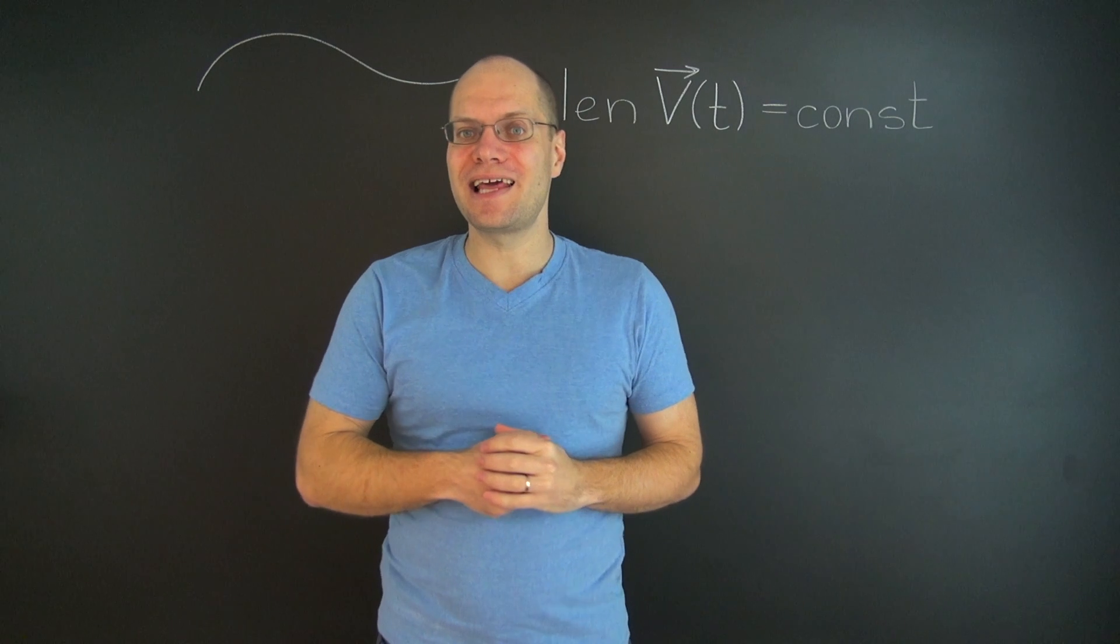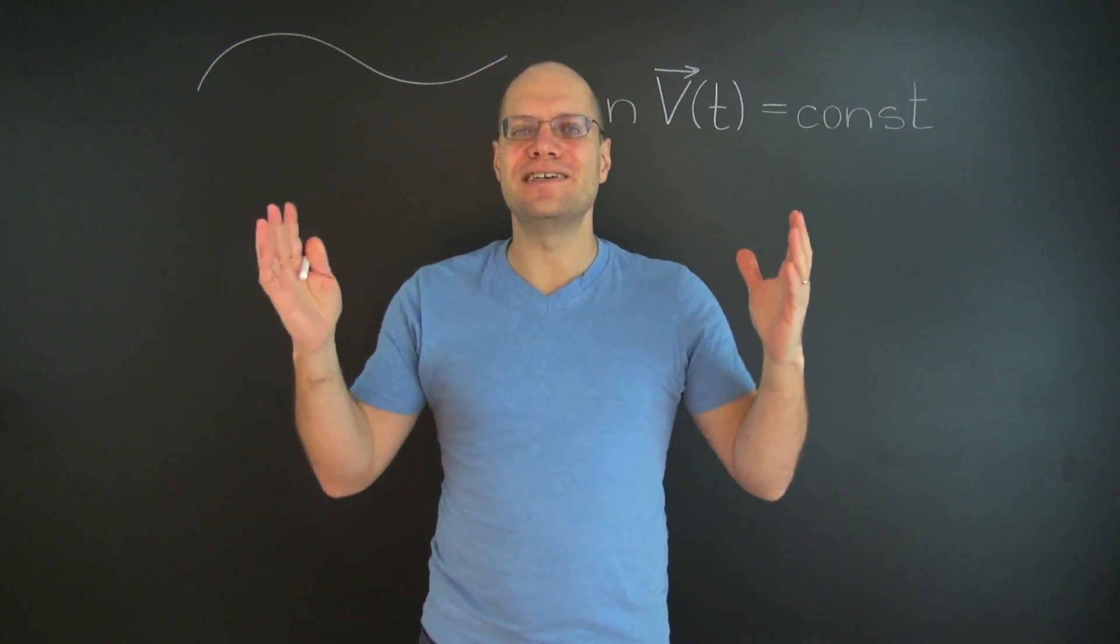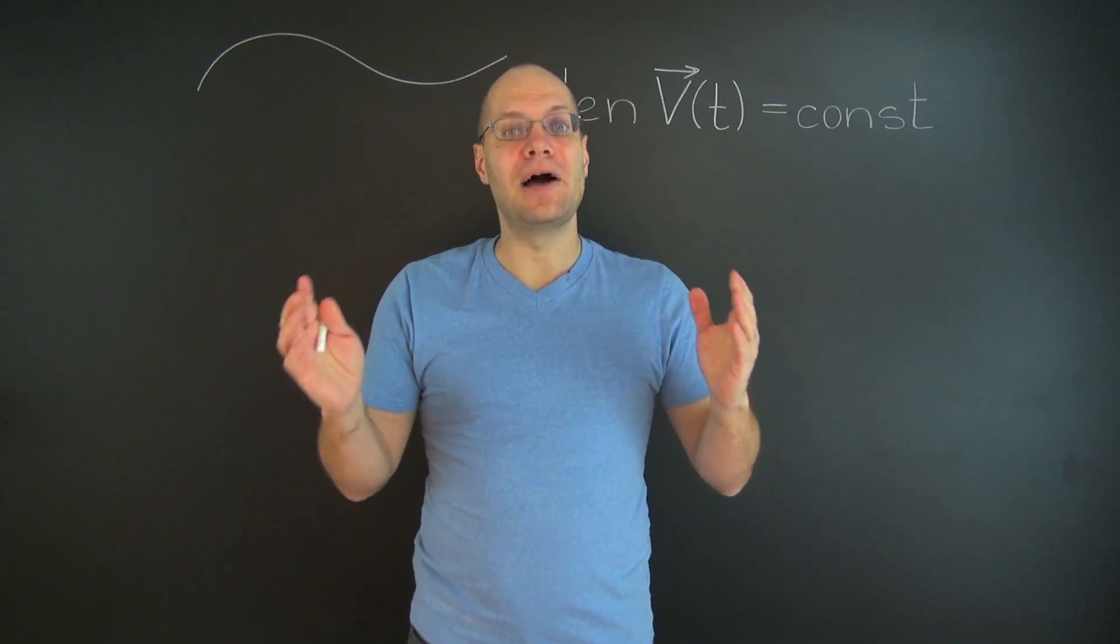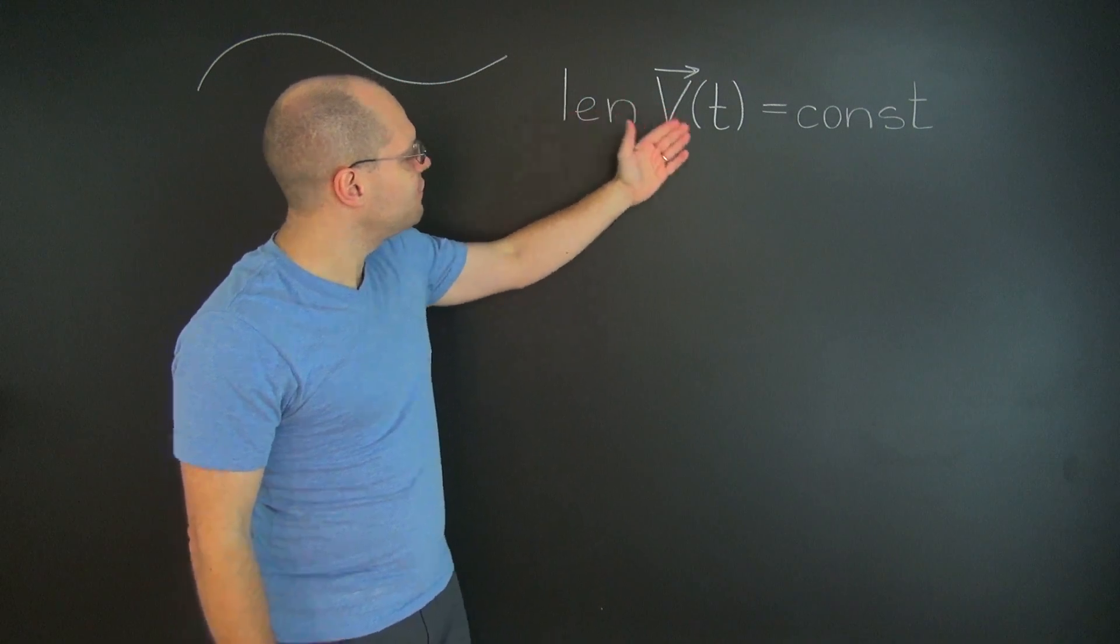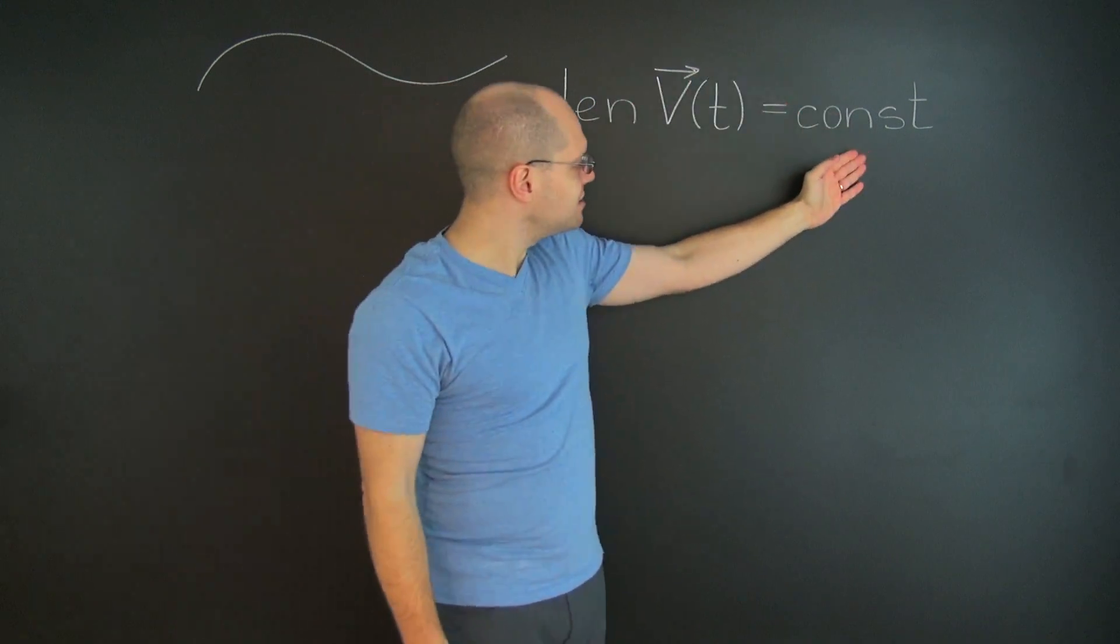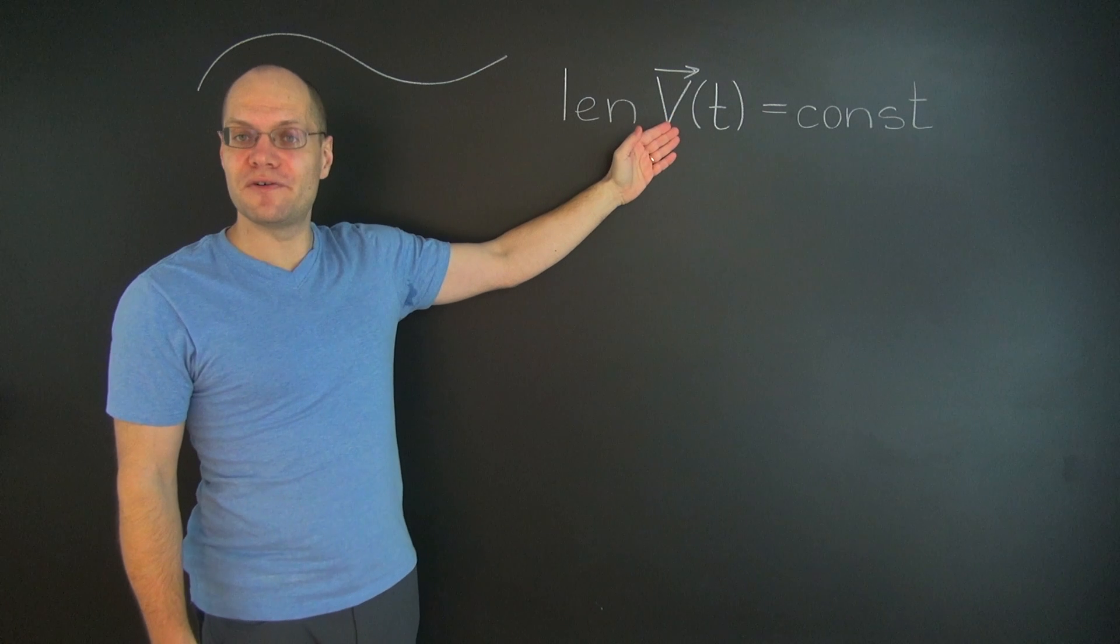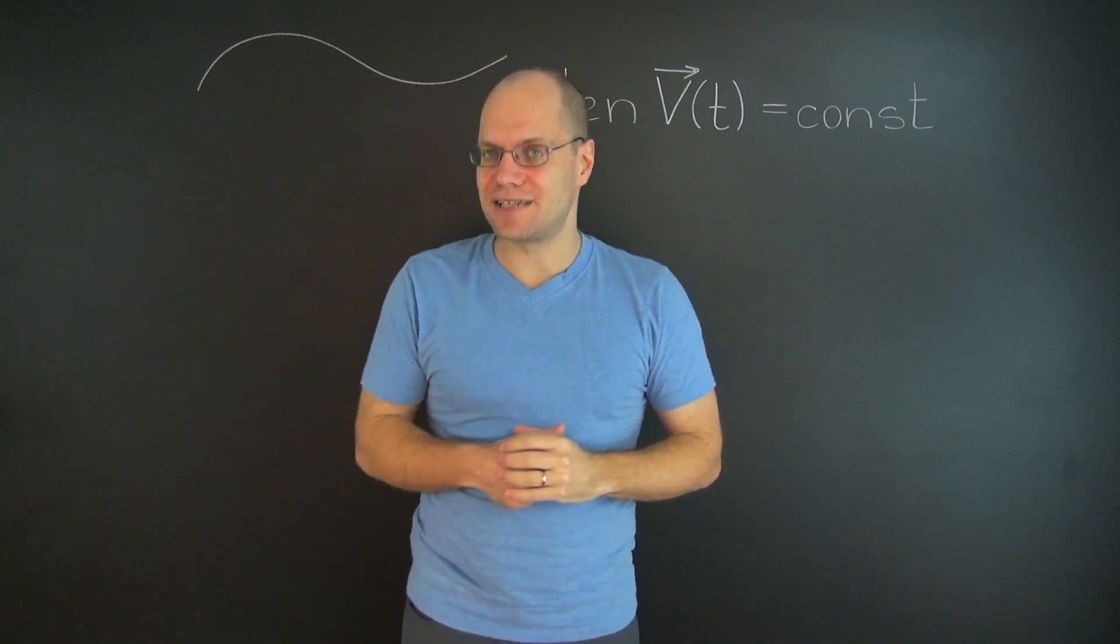I'm about to show you a simple calculation that literally changed my life. I will demonstrate that if the length of an evolving vector is constant, then the derivative of the vector is orthogonal to the vector itself.